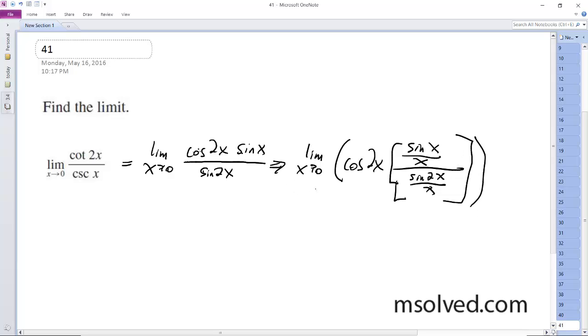So, taking the limit, we're going to have a limit as x approaches 0, of cosine of 2x, and this ends up being,